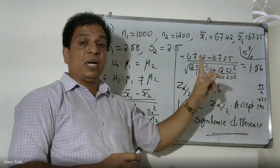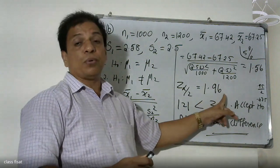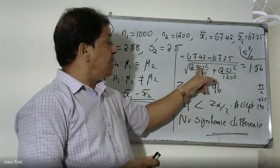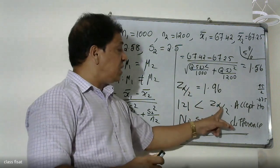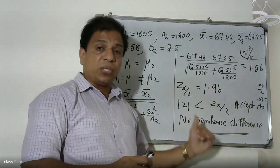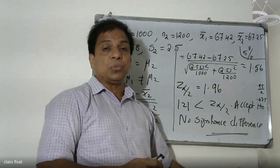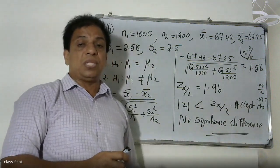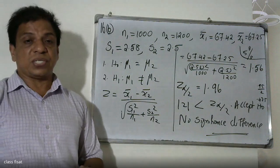The calculated value is less than the table value. Therefore we accept H0. No significance difference. OK.